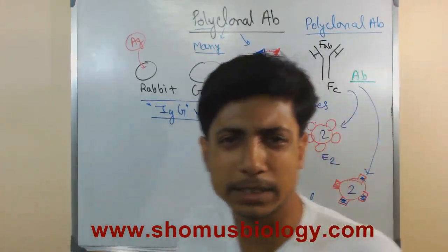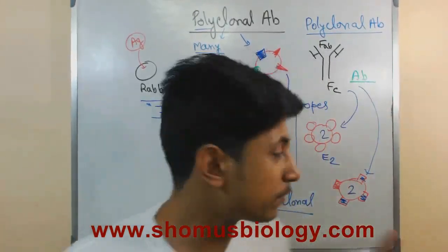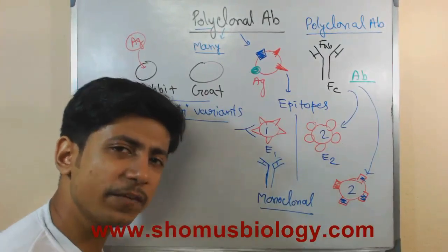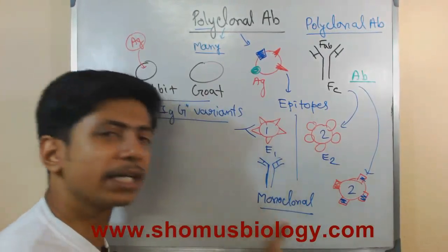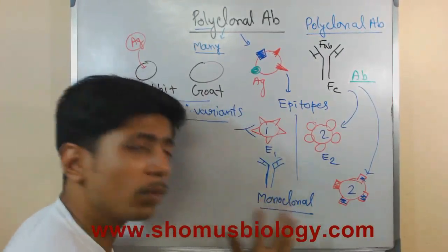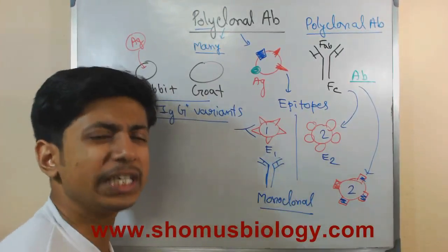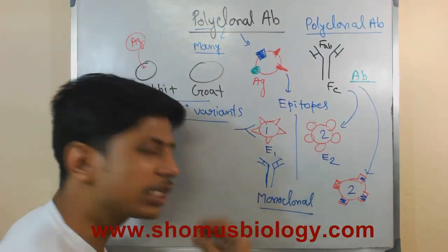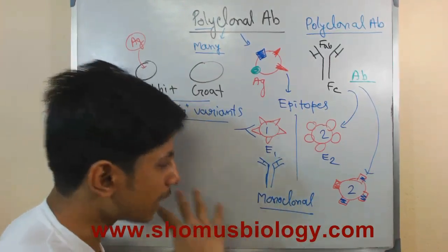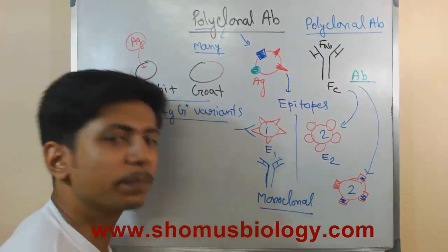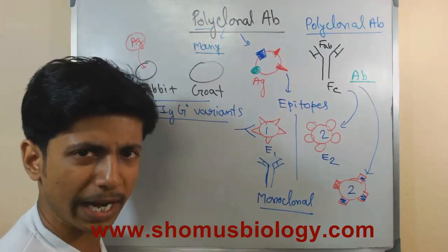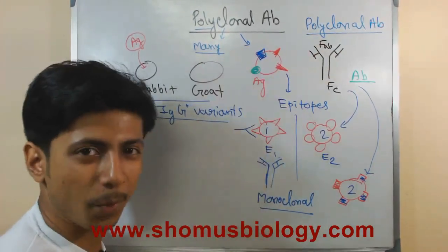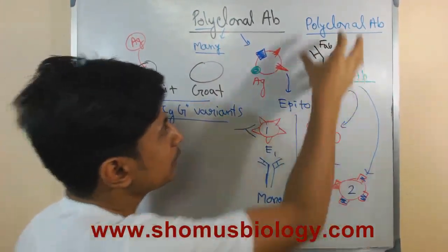For the monoclonal antibody, since it is highly specific and targets only one epitope, it is far more difficult to screen and develop. A huge technique is required, and highly trained personnel are needed to produce monoclonal antibody — which is not the case for polyclonal antibody.